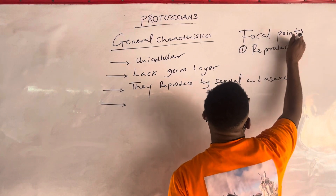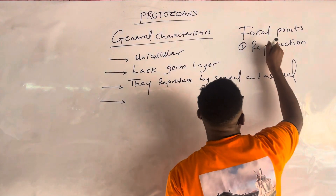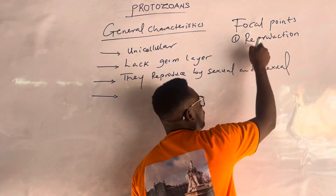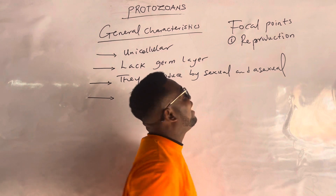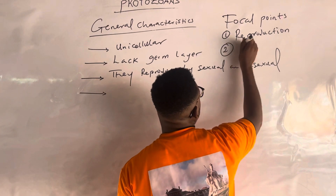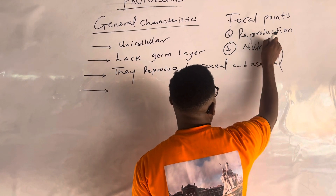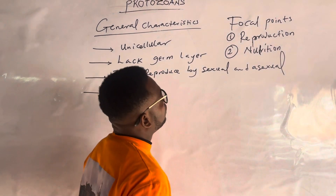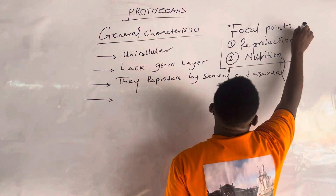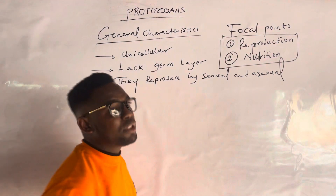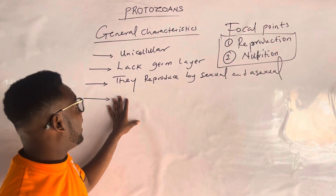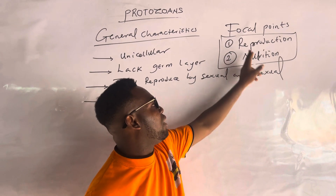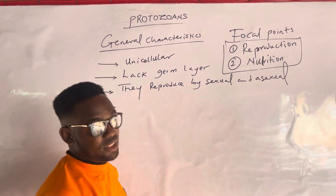Ask yourself, that kingdom you are describing, do you know any organism there? If yes, how does the organism you know reproduce? Another focal point is nutrition — you look out for nutrition and check how does the organism feed? Because these are my focal points, if I'm done giving you the general characteristics of protozoans, I will just elaborate these two things and that is it.